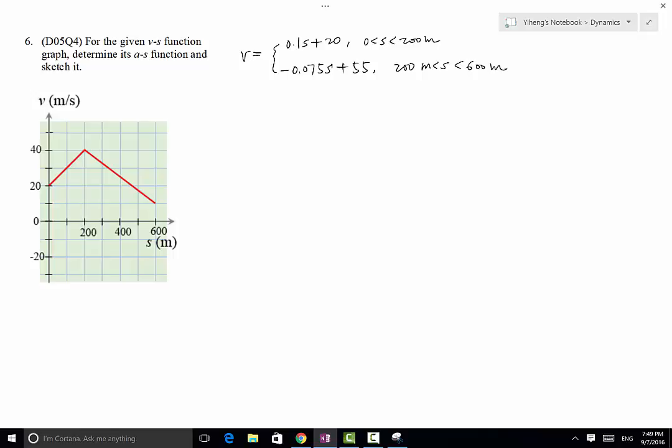We need to find a as a function of s. So we need to use this relation that a·ds equals v·dv. The other two, v equals ds/dt and a equals dv/dt.